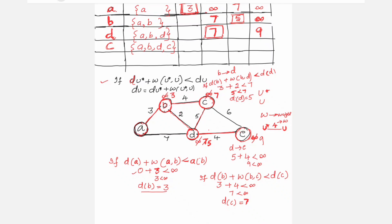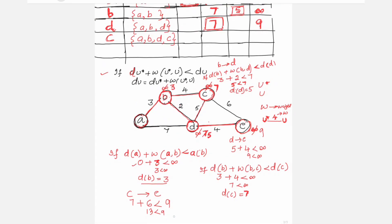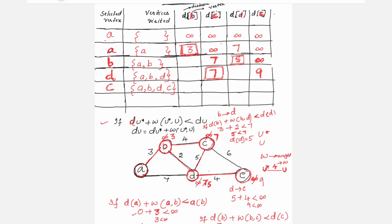For C to E: d(C) + w(C, E) = 7 + 6 = 13 < 9? No, 9 is lesser. So keep d(E) = 9. The algorithm is now complete. The final shortest distances from A are: B = 3, C = 7, D = 5, and E = 9.